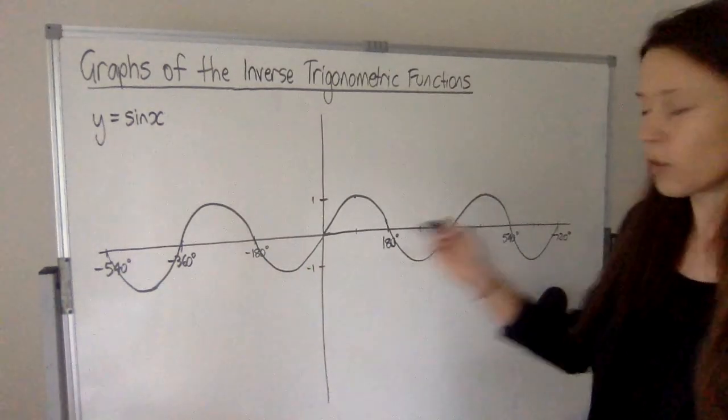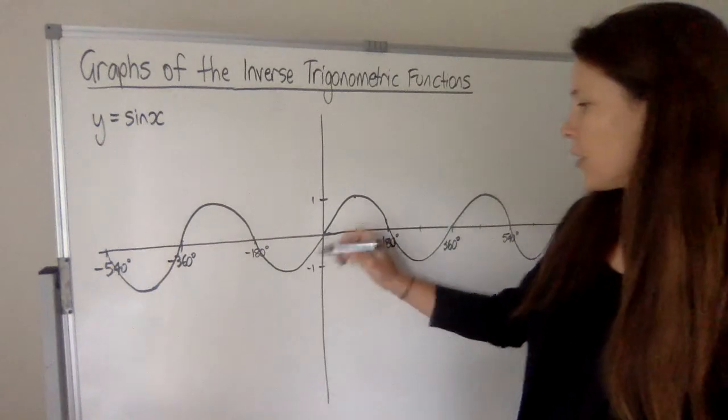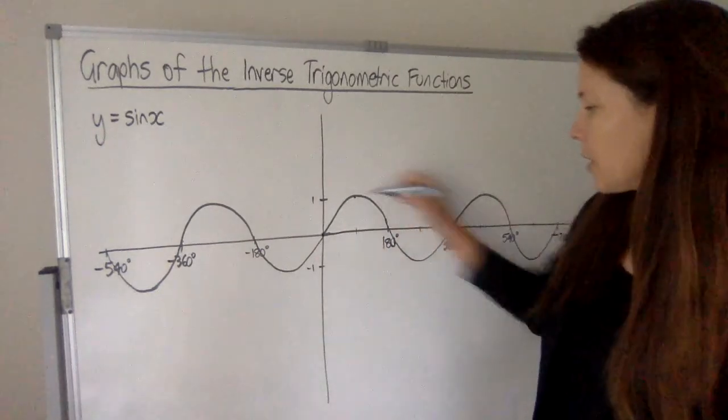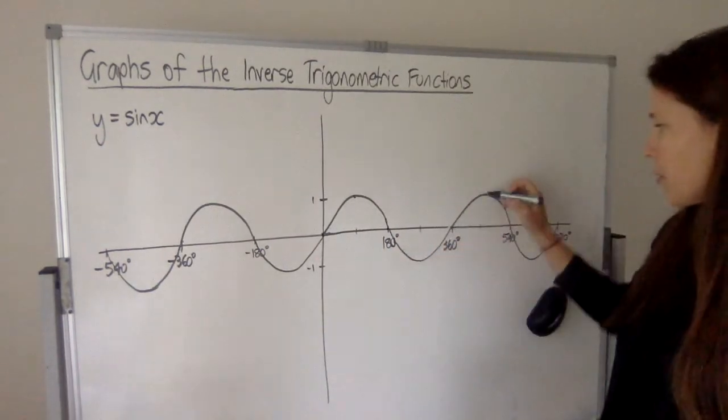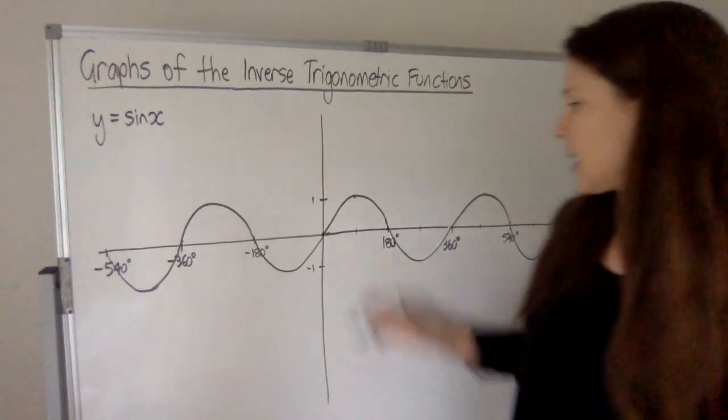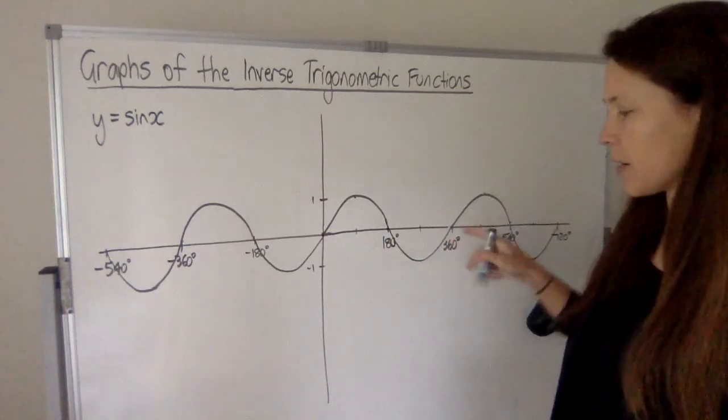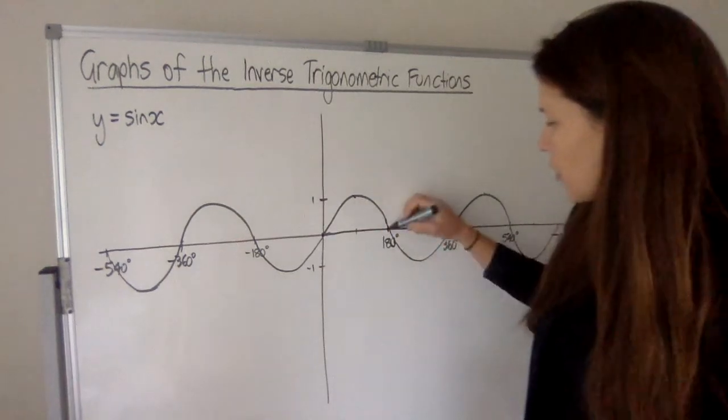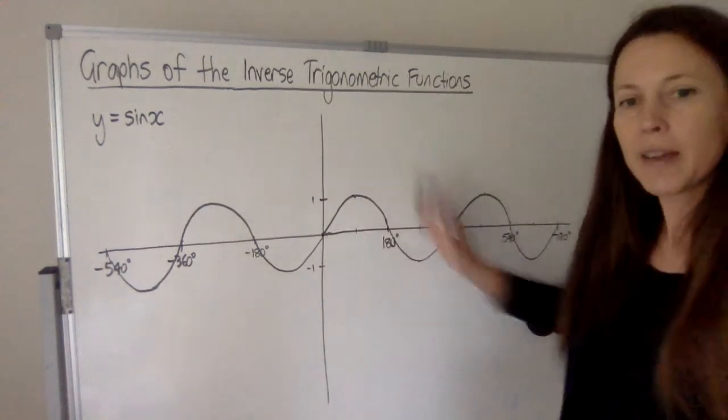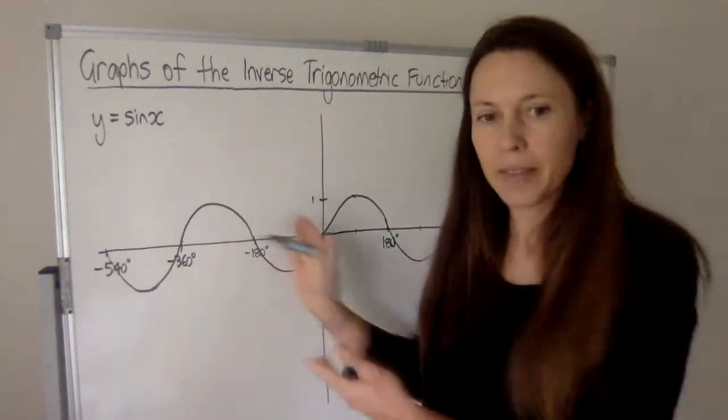But remember when you're drawing a sine, you've got all your points of interest being on the y axis: 0, 1, 0, minus 1, 0, 1, 0, minus 1. And they go through those points of interest every 90 degrees. So as you're graphing it, put your dots in where you know it needs to go through and then just join it up with your wavy line. That's good enough.